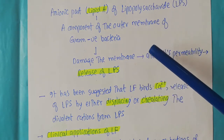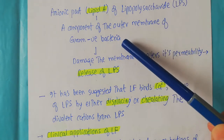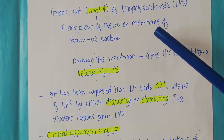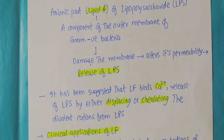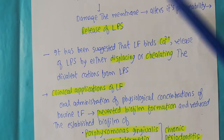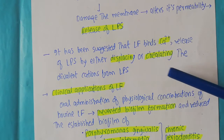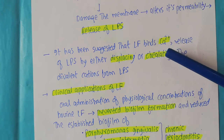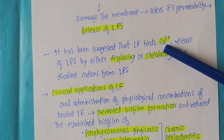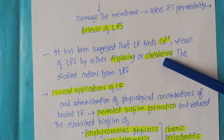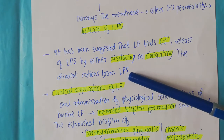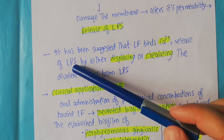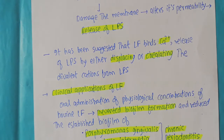Damaging the outer membrane of gram-negative bacteria has a damaging effect on those bacteria and they are no longer able to survive — meaning lactoferrin is a bactericidal enzyme. Another suggested mechanism is that lactoferrin binds calcium, an important component of the lipopolysaccharide. When lactoferrin binds calcium, it displaces or chelates divalent cations from the LPS, causing the release of LPS and thereby exerting bactericidal activity.